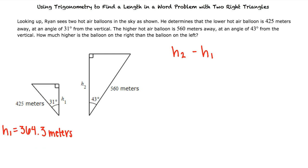Next, we'll take a look at the triangle on the right. Again, we know the angle, the length of the hypotenuse, and we want to find the length of the adjacent side. We can set up another cosine equation and substitute in our known values. When we solve for H2, we see that the height of the right balloon is 409.6 meters.